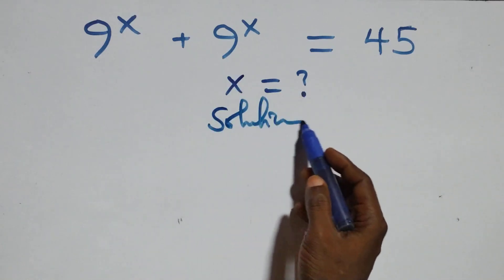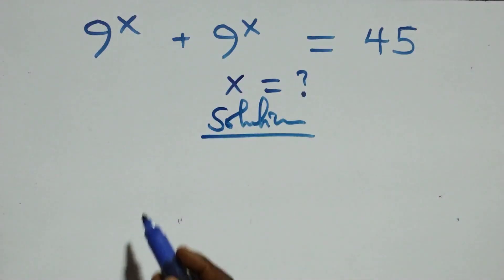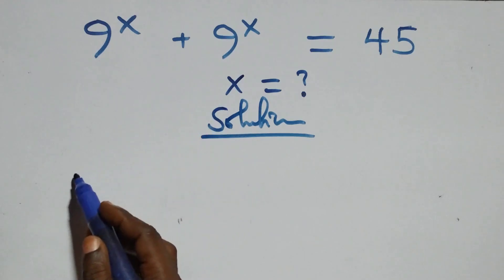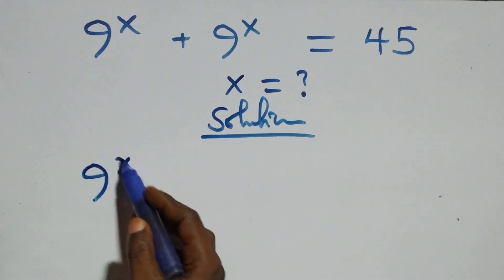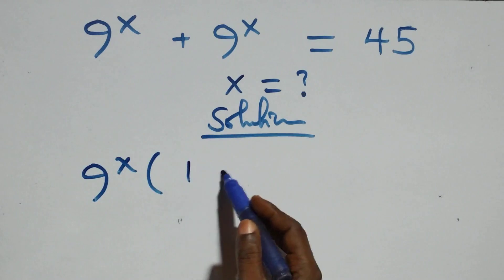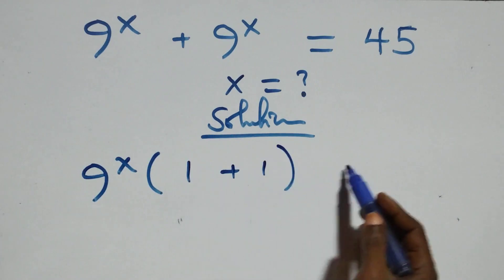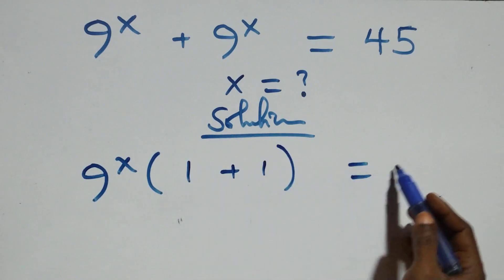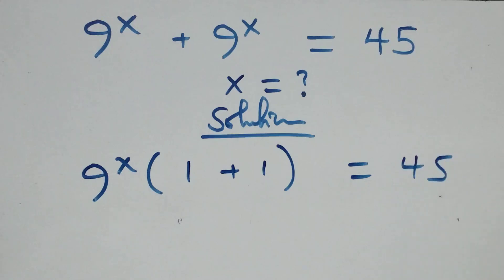From what we have here, we factor 9 raised to power x out here. That is, we have 9 raised to power x into brackets 1 plus 1, equals to 45 from here.